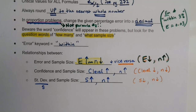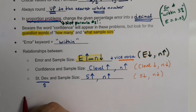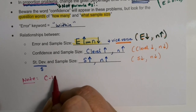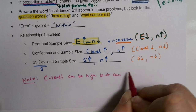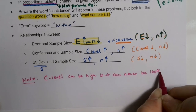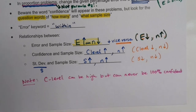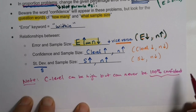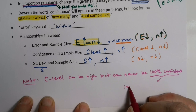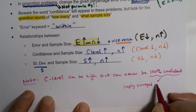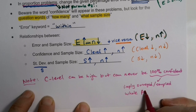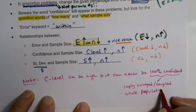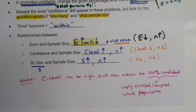One other important note: your confidence level can never be 100%. A 100% confidence level would imply that you actually surveyed or sampled the entire population, which generally isn't feasible. You'll learn more about why in chapter 10.